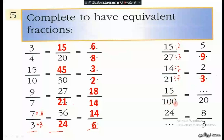Here we have 100 becoming 20, so it's divided by 5. On the upper side we also divide by 5: 15 divided by 5 is 3. Then 24 becomes 8, so it's divided by 3. We divide the numerator by 3 as well: 3 times 3 is 9, so 9 divided by 3 is 3.